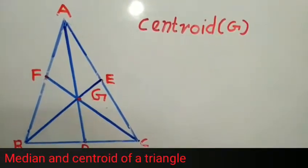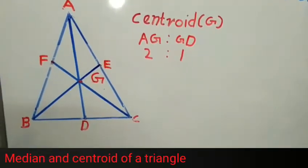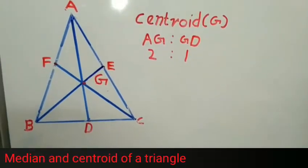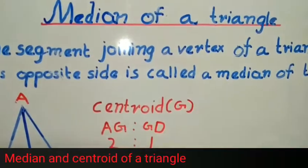Point G is called centroid. The ratio of AG to GD is 2 to 1. This is about median of a triangle.